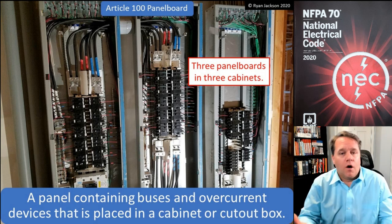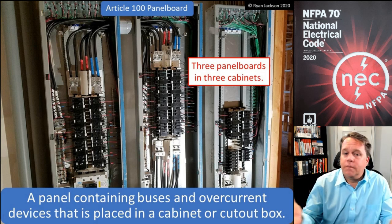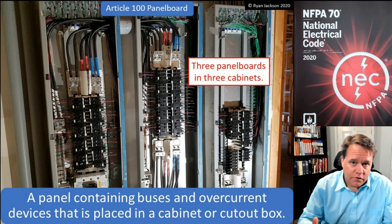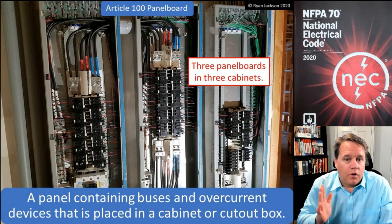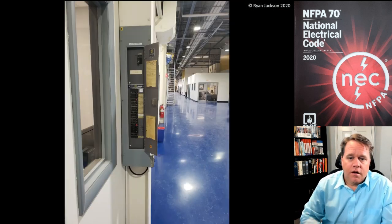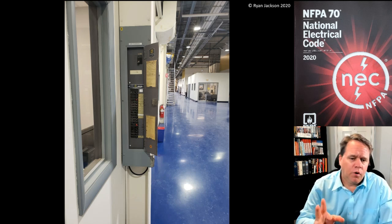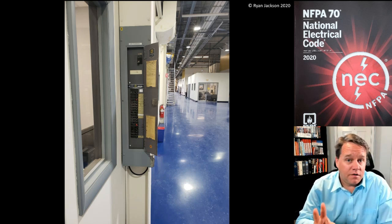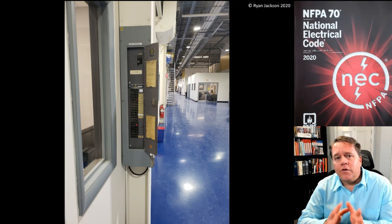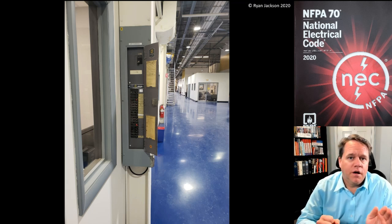If you're an electrician, you know what a panel board is — we've all installed a million panel boards, we've all got one at our house or place of business. Here's an example of a somewhat unusual panel board some of you may have never seen. This is called a column width panel board.